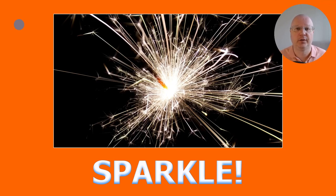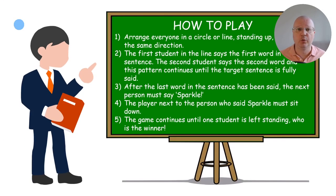Next, you need to reinforce the sentence structure. So you play a simple game called Sparkle. How do we play it? Arrange everyone in a circle or line standing up and facing the same direction. The first student in the line says the first word in the sentence. The second student says the second word. And this pattern continues until the target sentence is fully set. After the last word in the sentence has been said, the next person must say Sparkle. Or you can say any other word. The player next to the person who said Sparkle must sit down.